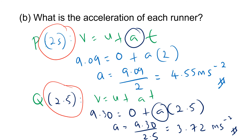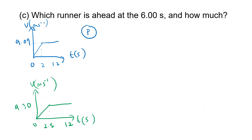Question c asks which runner is ahead at 6 seconds and by how much. We use the graphs drawn in part a. At t = 6 seconds, we find the area under the graph for each runner up to that point to determine displacement. We compare which displacement value is greater.